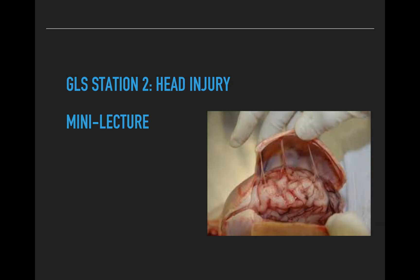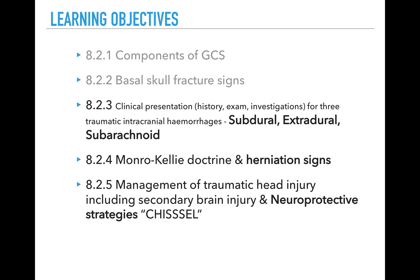Welcome everyone to GLS station 2 on head injury. This is a short mini lecture to help you with answering the questions on the GLS station. The learning objectives cover the components of GCS and basal skull fracture signs, which were covered in the main lecture with the case about Angus. This mini lecture will cover subdural, extradural and subarachnoid bleeds, the clinical signs of herniation and how the Monroe-Kelly doctrine helps us understand those signs, and neuroprotective strategies to prevent secondary brain injury.